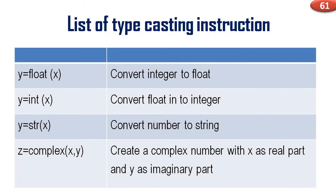List of typecasting instructions: y = float(x) converts integer to float. y = int(x) converts float into integer. y = str(x) converts a number to string. z = complex(x, y) creates a complex number with x as the real part and y as the imaginary part.